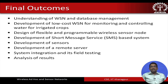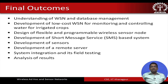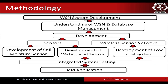Another objective was the design of a flexible and programmable wireless sensor node, and the development of an SMS-based system. Periodically, farmers need to get SMS messages on their mobile phones about the condition of the field — soil moisture, temperature, and so on. A remote server was also developed to run all the analytics and analyze the data being received, along with system integration, field testing, and analysis of results.